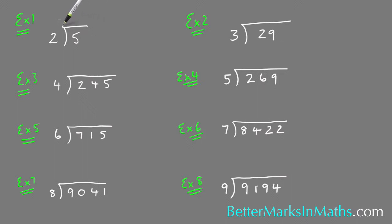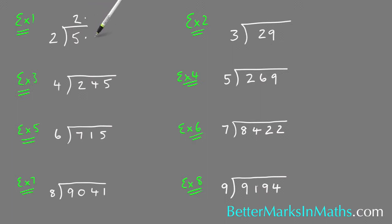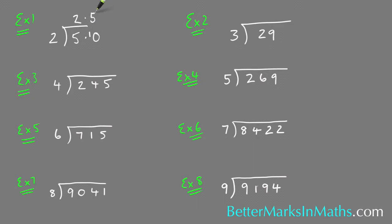Starting with example one: how many twos in five? There's two with a remainder of one. What you need to do is put a point after the two and after the five, then put a zero, and carry that remainder of one. Then how many twos in ten? The answer is five. So how many twos in five? The answer is 2.5.